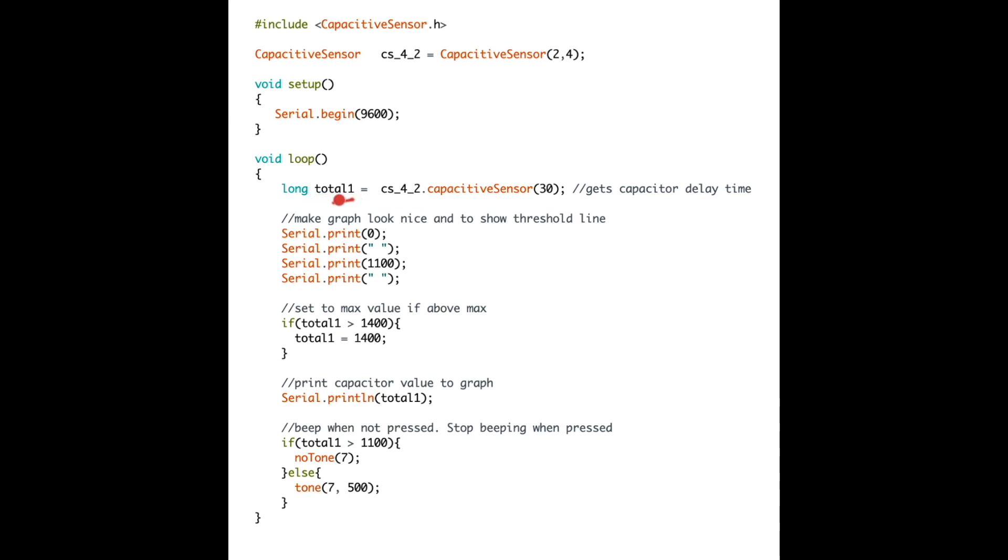I assign that delay time to total1. For me, the delay value was less than 1100 when I wasn't touching the plate, and greater than 1100 when the plate was being touched. This code sets up the graph so there is a visible 0 and 1100 value line so the graph can show the actual value going over 1100.